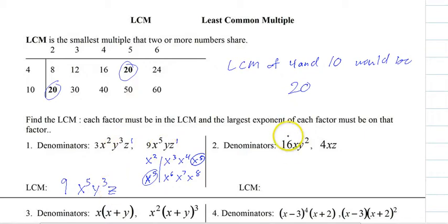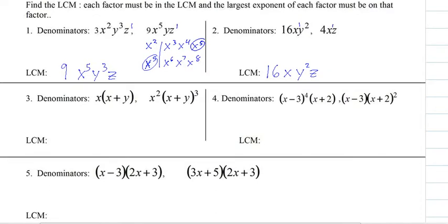So let's try this one again. 16 and 4. 4 goes into 16, so it's 16. We also have an X, a Y, and a Z. Largest of the X's, largest exponent for the X's is 1, so it's just 1. For the Y's is squared, and for the Z is Z. And that's it. That's your LCM.